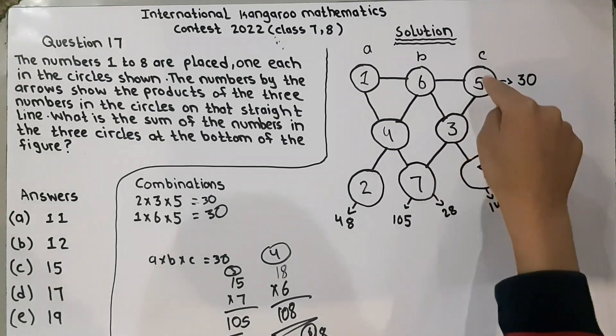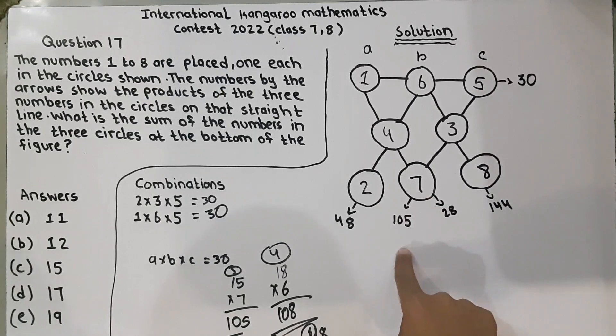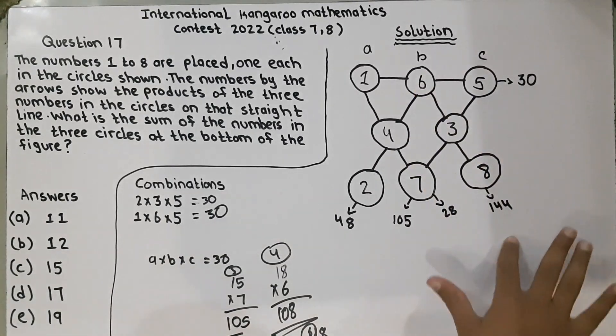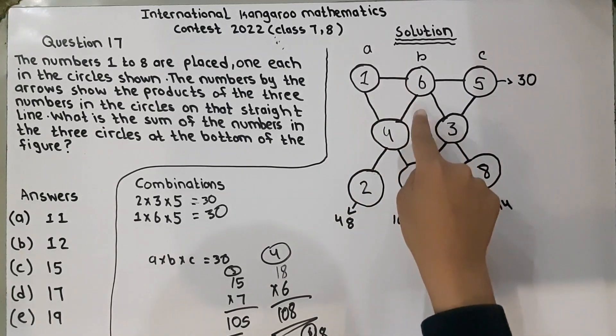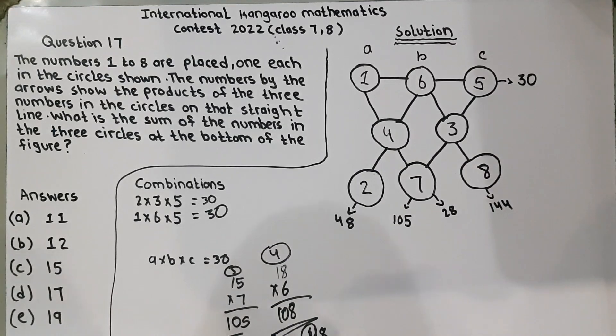7 times 5 is 35. And, 5 times 3 is 15. 15 times 7 is 105. 6 times 3 is 18. 18 times 8 is 144. And, 1 multiplied by 6 is equal to 6. 6 times 5 is 30. So, it means we have solved it right.